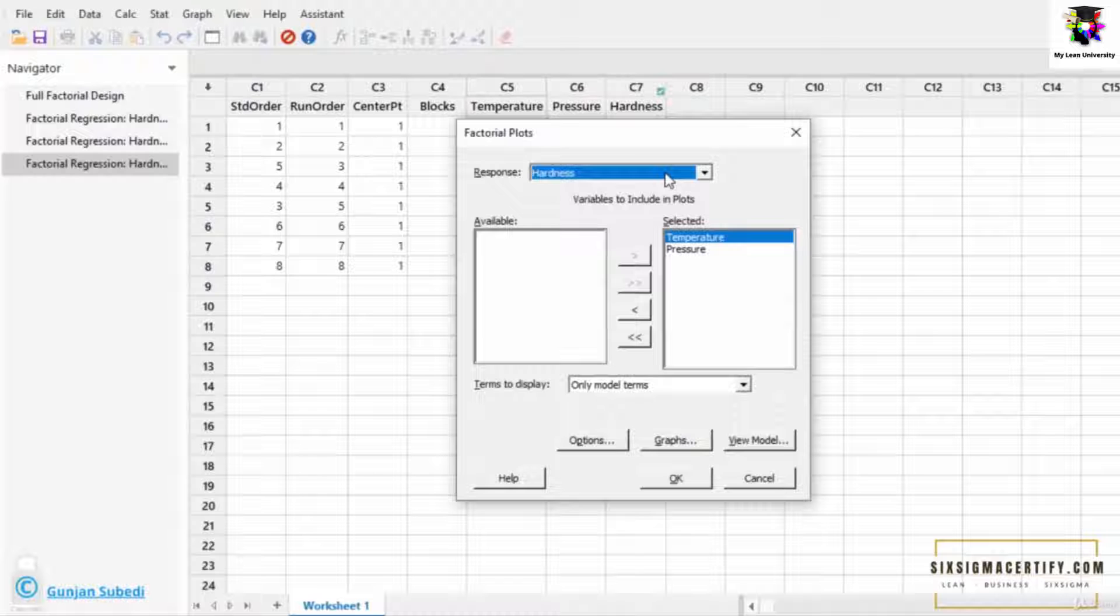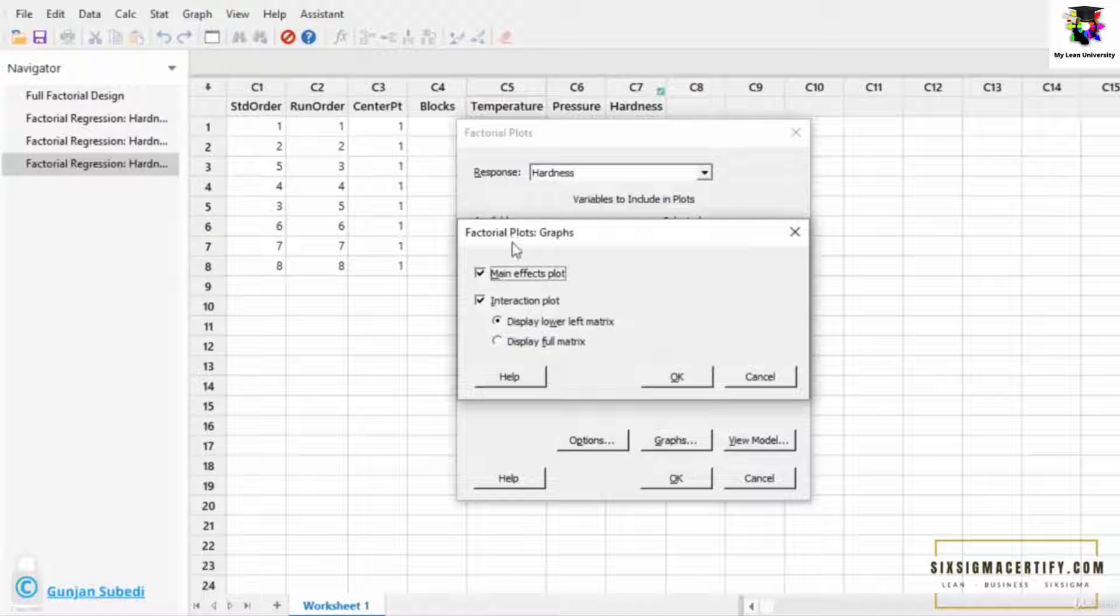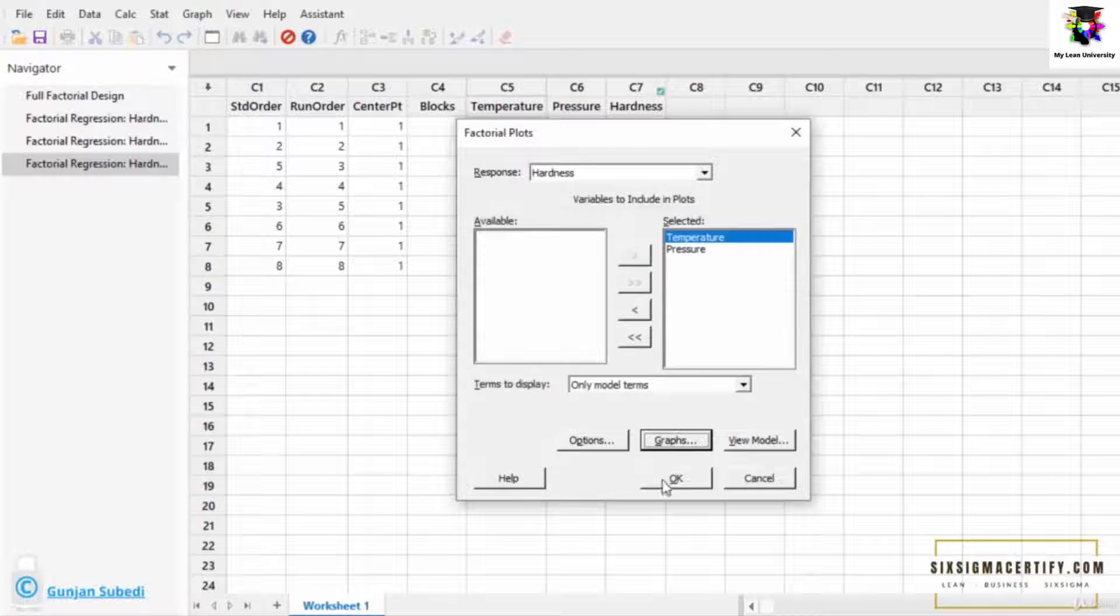Here the response is the hardness and the factors are temperature and pressure. You have to click the graph and make sure that you click the main effects plot as well as interaction plot, then you click the OK button and OK button again.